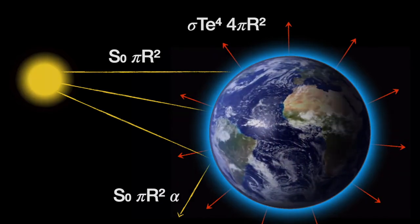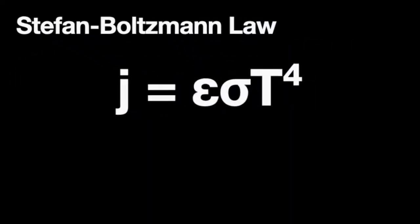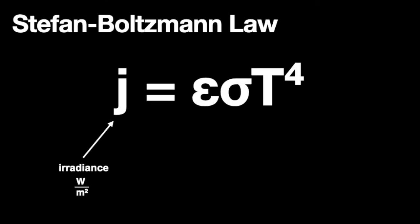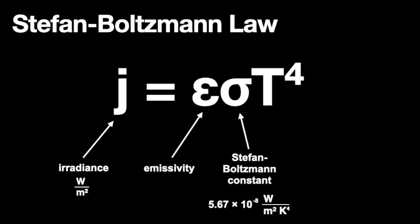Radiated energy can be calculated with the Stefan Boltzmann equation. This is a fairly simple equation that just says that the energy radiated away from a surface is equal to its emissivity multiplied by a constant multiplied by temperature in Kelvin units to the fourth power.